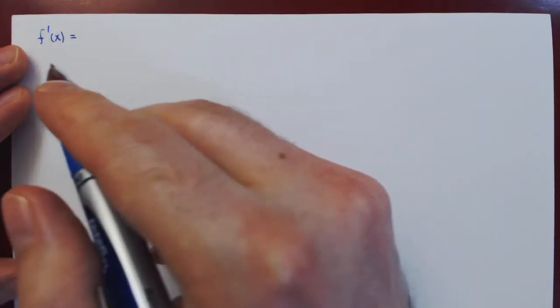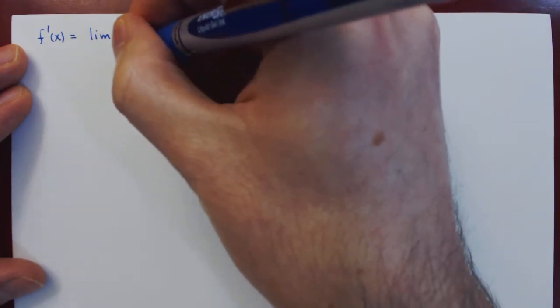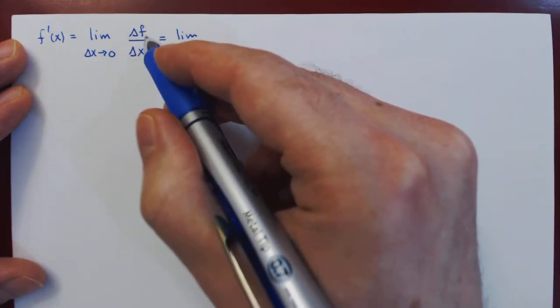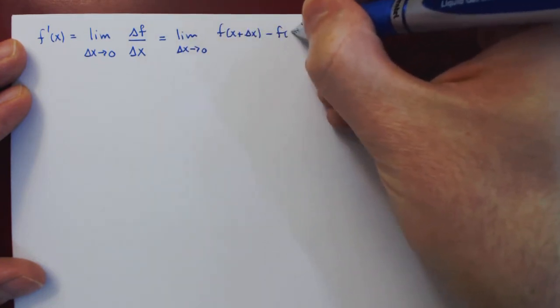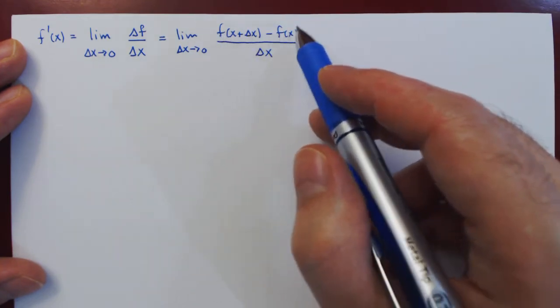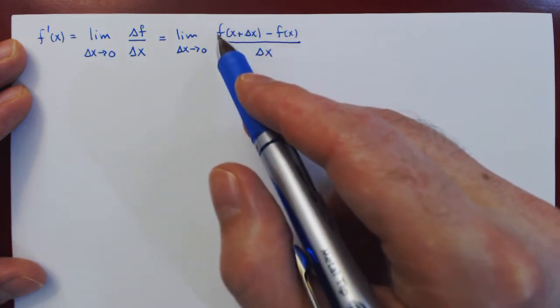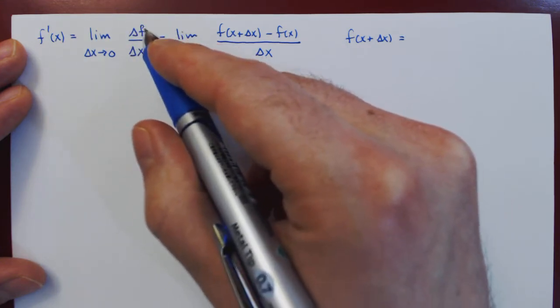We assume we have two functions, f and g, where we know their derivatives. The derivative of f is the limit of the change in the function, delta f, versus the change in x, as delta x approaches 0. In long form, delta f is f(x + Δx) minus f(x), over delta x. So f(x + Δx) equals f(x) plus delta f.